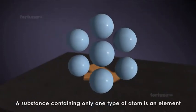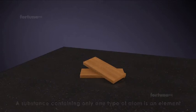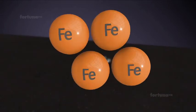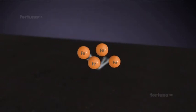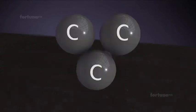A substance containing only one type of atom is an element. For example, iron is an element because it contains only iron atoms. Similarly, carbon is an element because it is made up of nothing but carbon atoms.